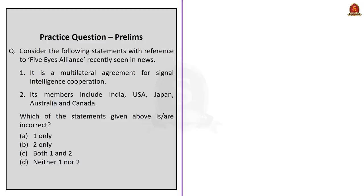This question is with reference to Five Eyes Alliance recently seen in news. Two statements are given asking which statements are incorrect. First statement: it is a multilateral agreement for signal intelligence cooperation. This statement is correct. Second statement: its members include India, USA, Japan, Australia and Canada. This statement is incorrect because it is an intelligence alliance between US, UK, Australia, Canada and New Zealand. India is not part of this Five Eyes Alliance. So the correct answer is option B, 2 only, because only the second statement is incorrect.